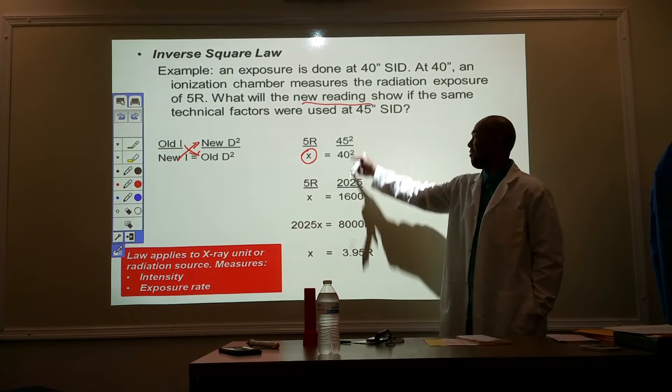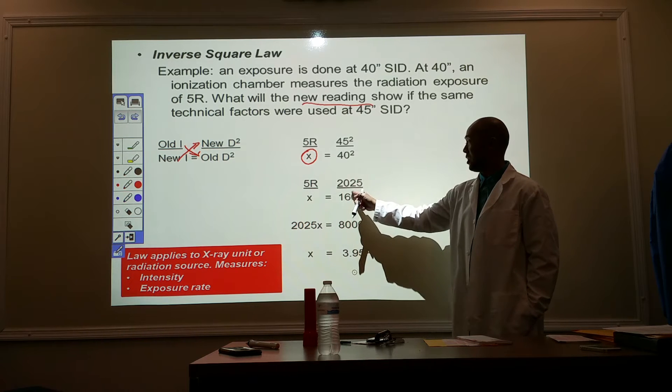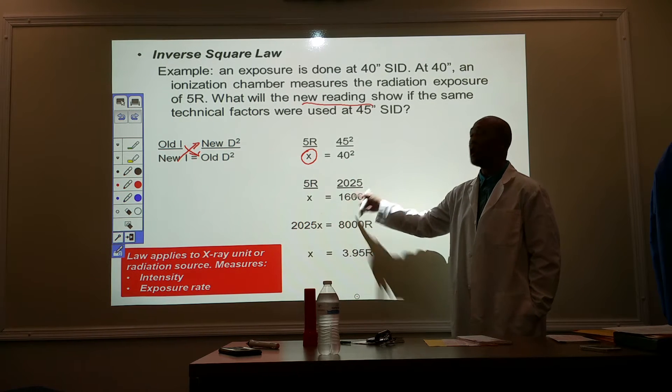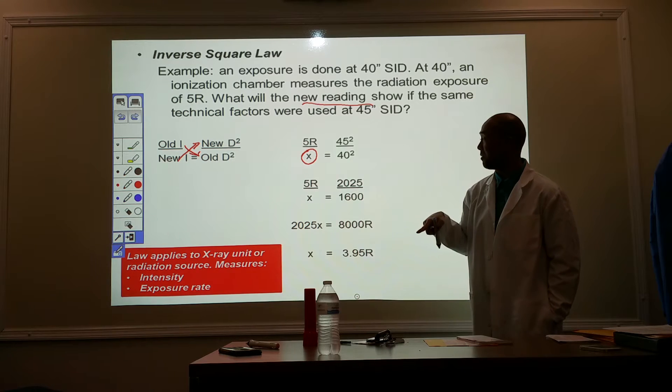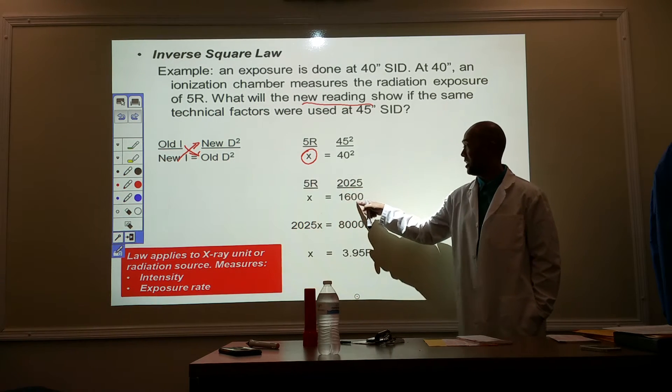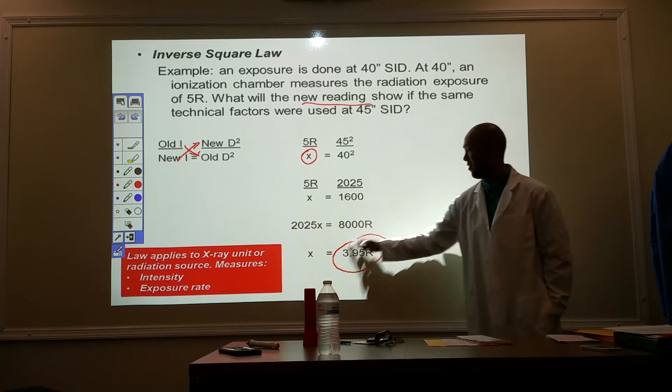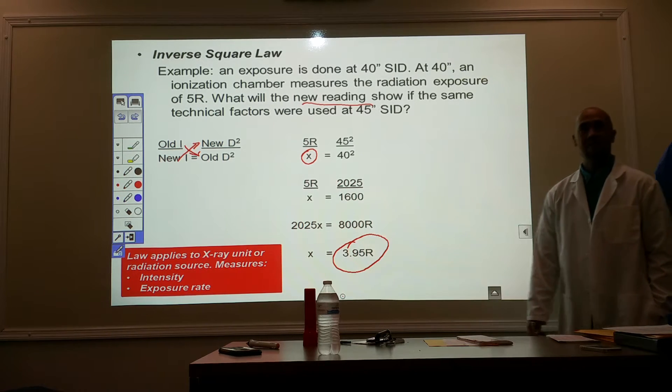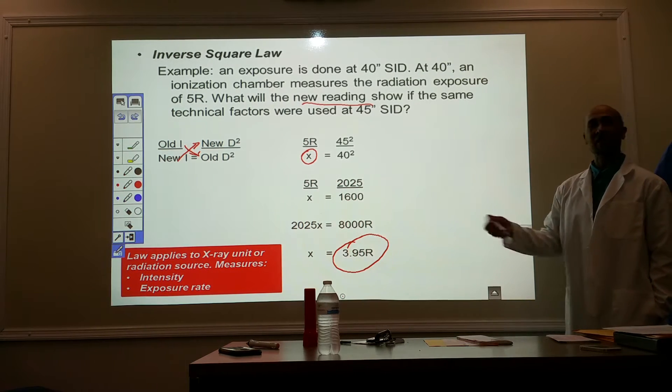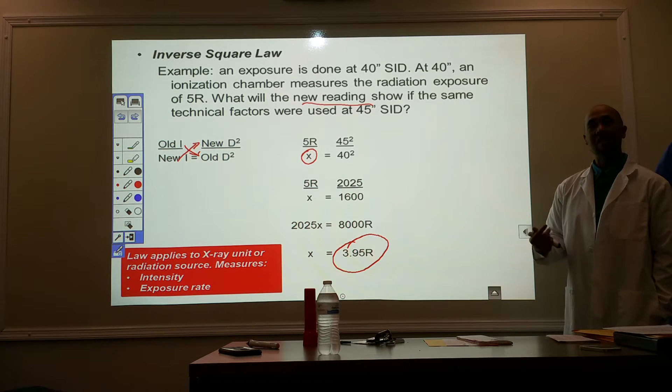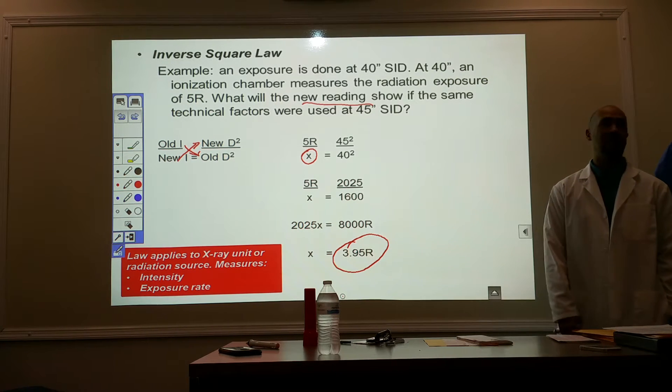All right. So, square of 45 is 2025. Square of 40 is 1600. Cross-multiply. Now, you can cross-multiply and divide. 5 times 1600 divided by 2025 will give you 3.95R. So, at 45 inches, I'm a little bit further. The reading that I'm receiving now is going to be 3.95R.